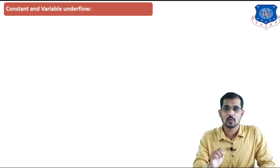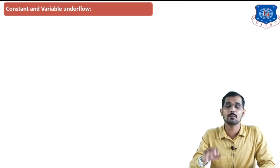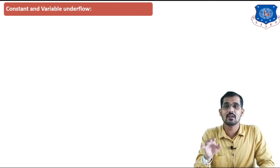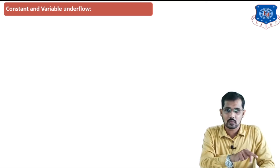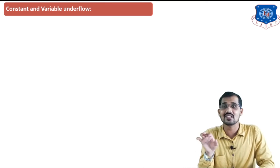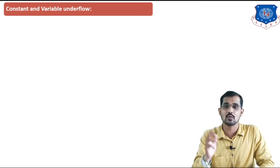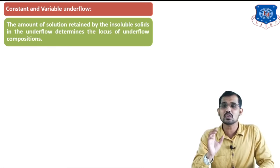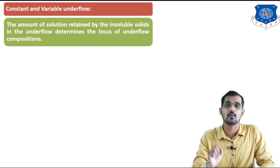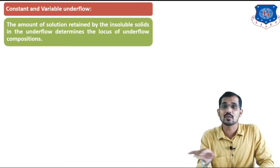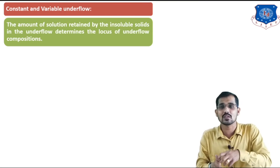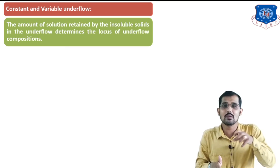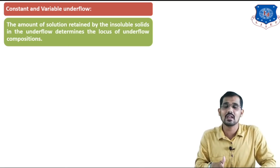Now we will see constant and variable underflow. Constant underflow means the underflow line — the JK line — is a straight line, indicating constant underflow. If that line is varying, that is variable underflow. The amount of solution retained by the insoluble solid in the underflow determines the locus of the underflow composition. If the solution retained by the insoluble solid is constant in nature, we get constant underflow. If it is variable, we get variable underflow.